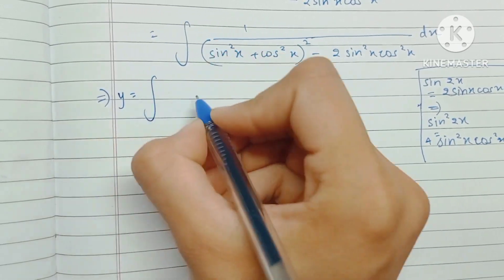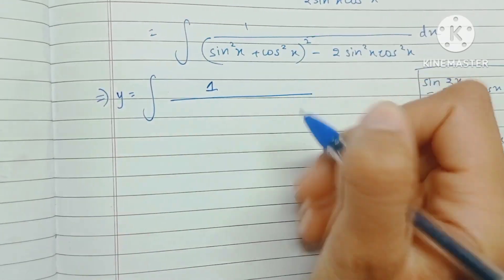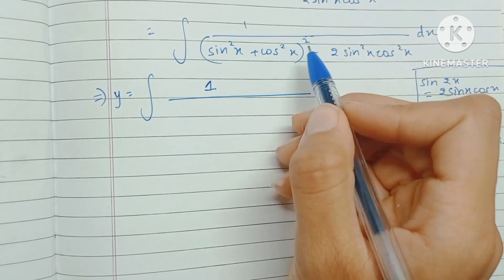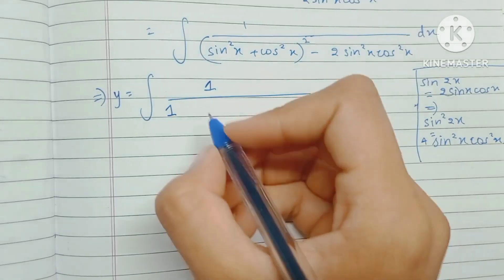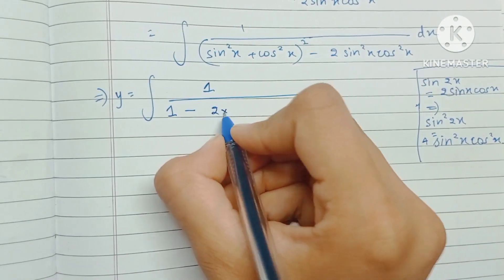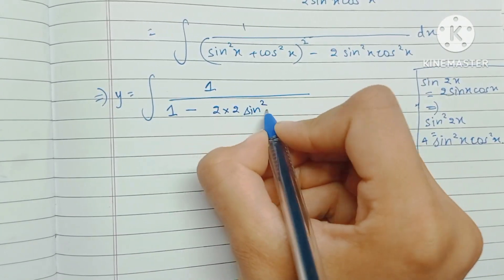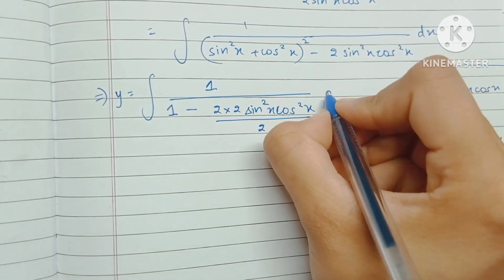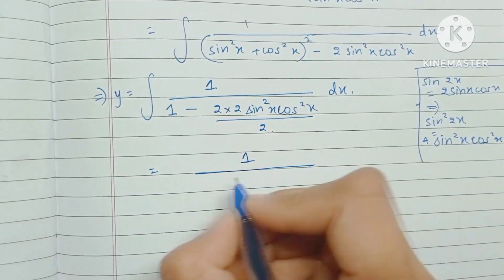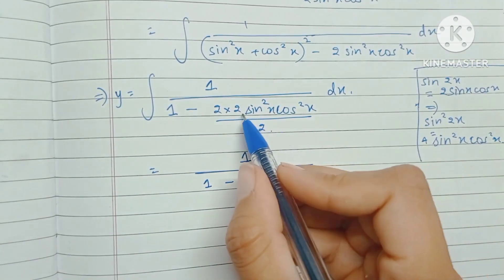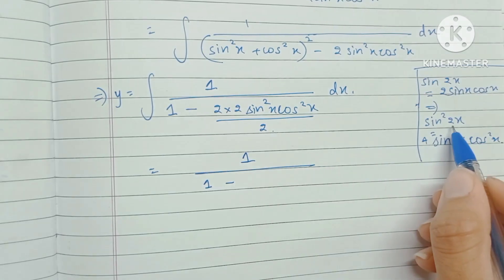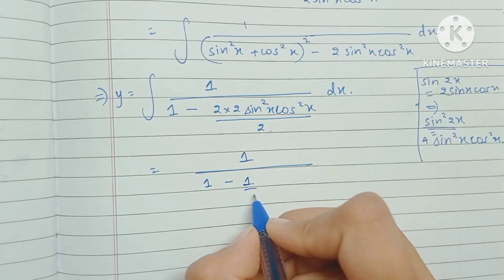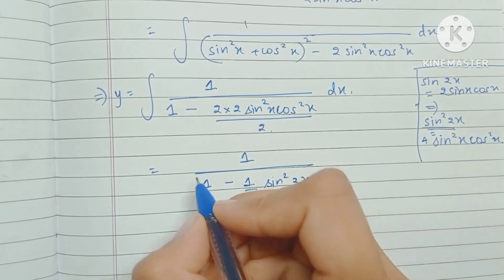So y equals the integral of 1 upon... notice that sin²x + cos²x is 1 and 1² is 1, so this term can be written as 1. Multiplying and dividing by 2 so the net effect is zero, this becomes 1 upon 1 minus (1/2)sin²2x, since 4sin²x·cos²x is sin²2x.